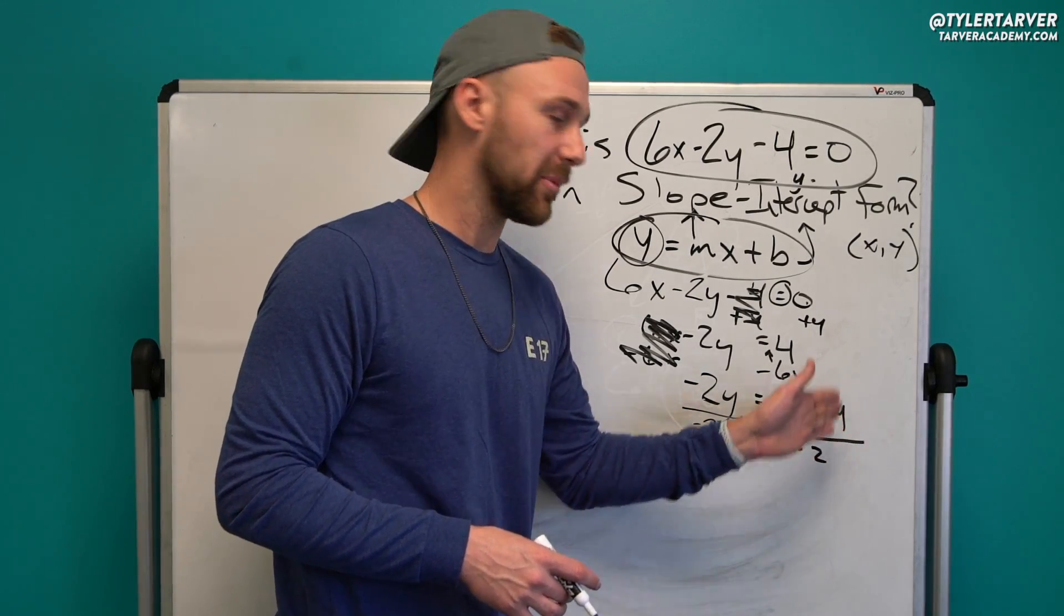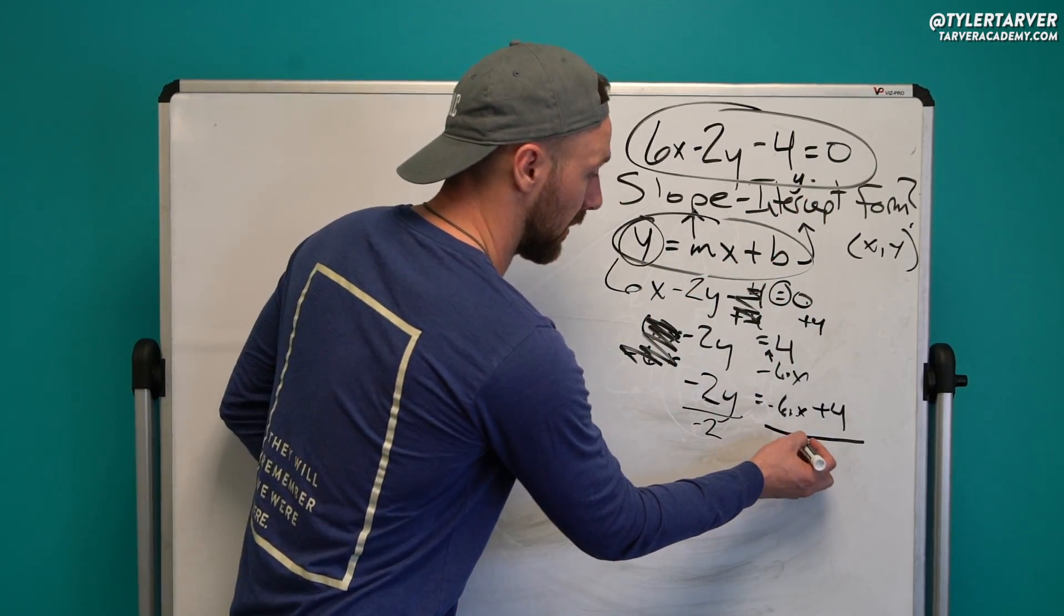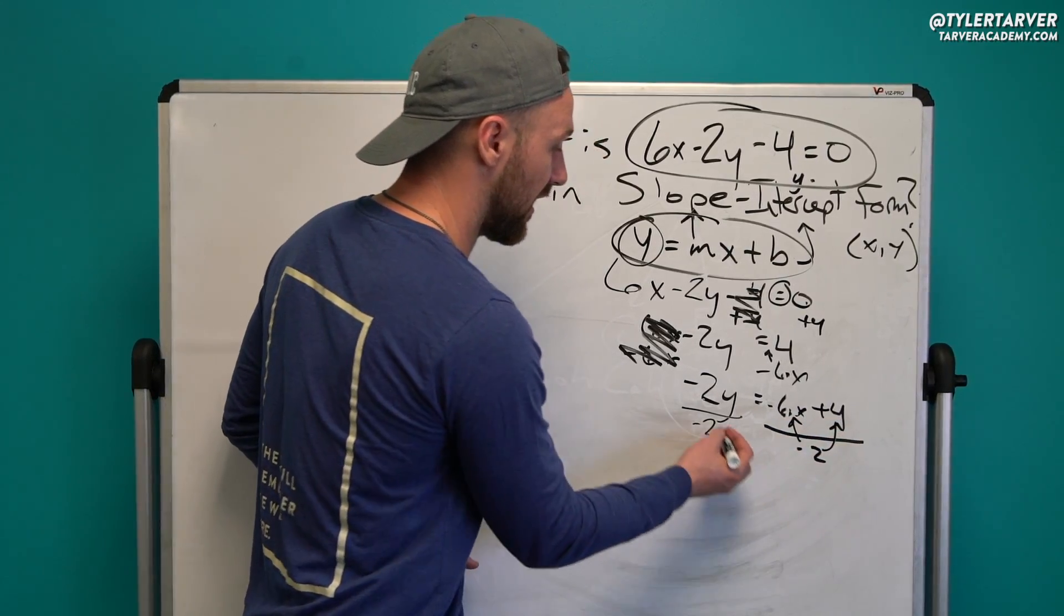So I'm going to have to do it to both of those. I'm going to apply it there and there and there. Now I do it here and it gets rid of it because negative 2 divided by negative 2 is 1, and 1 times y is just y.